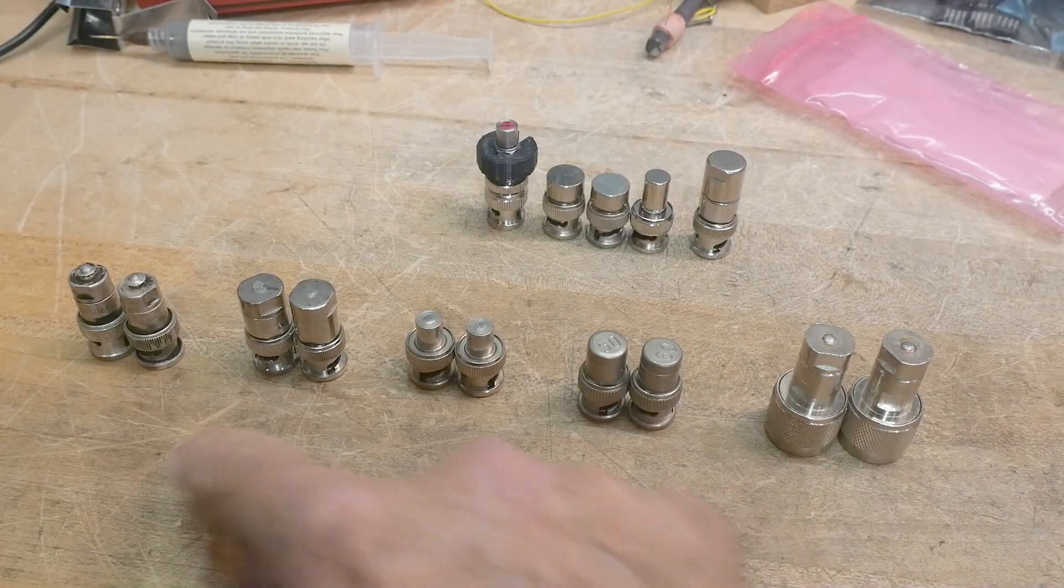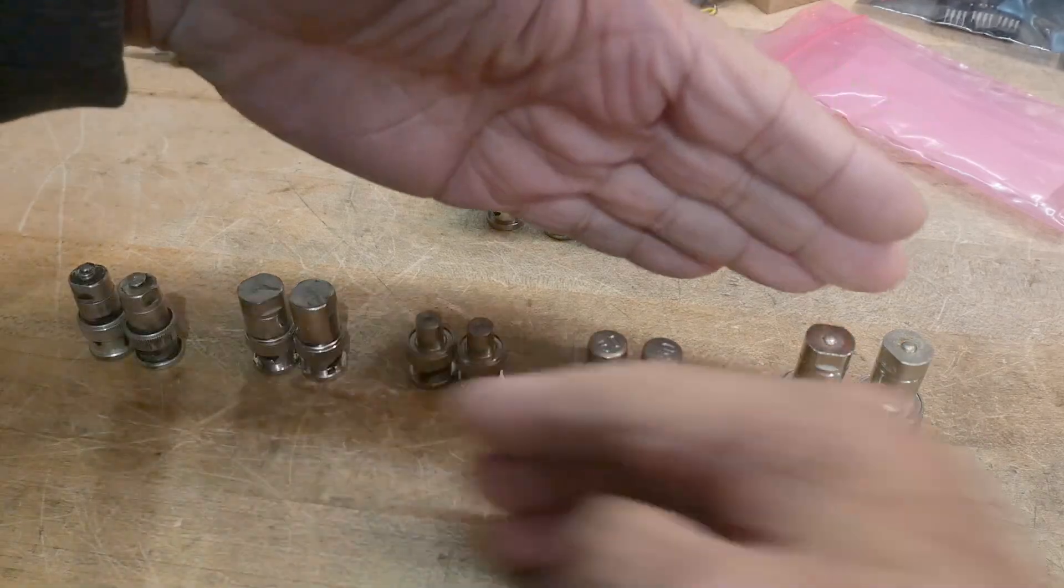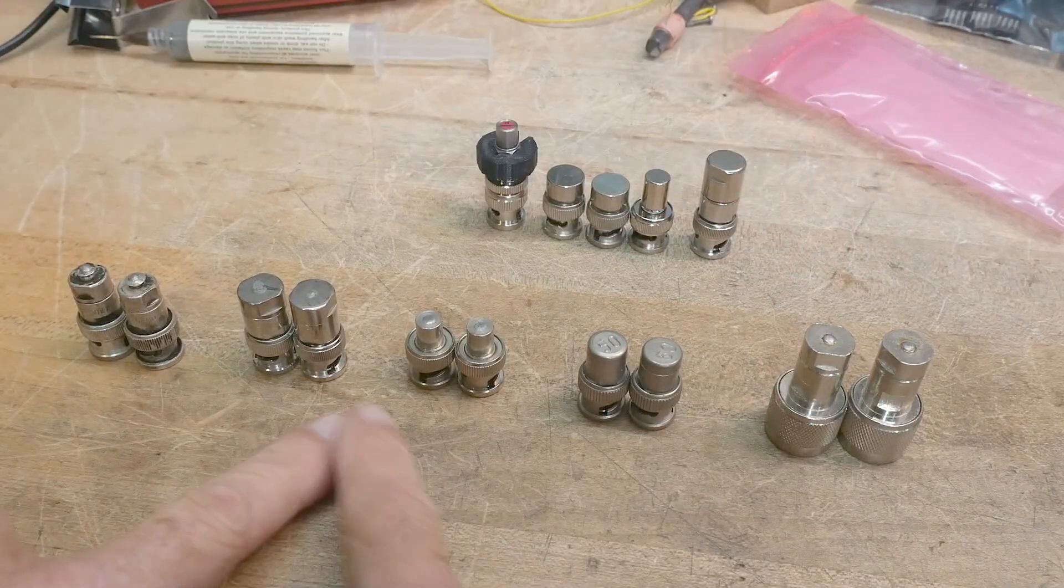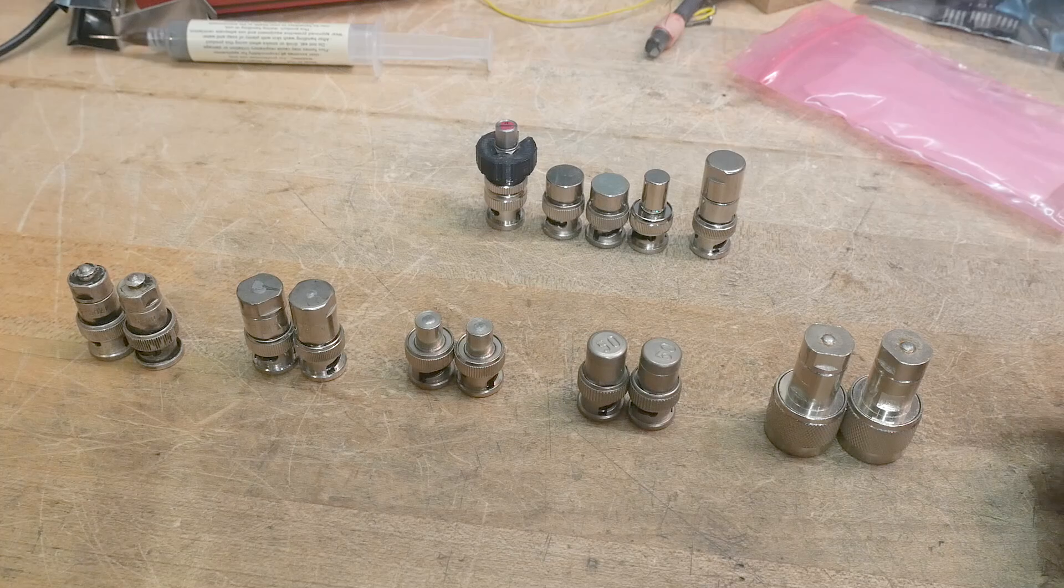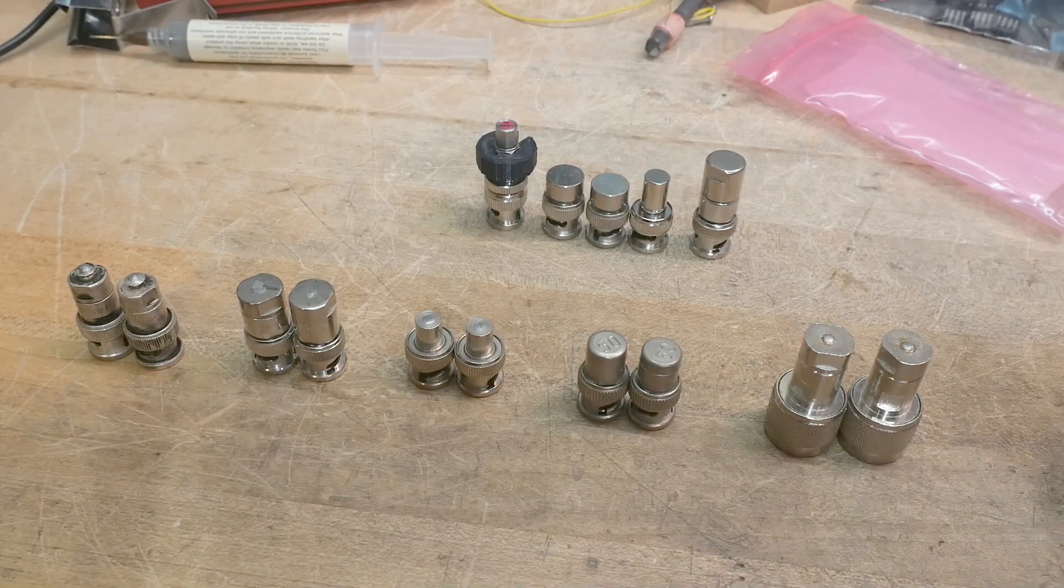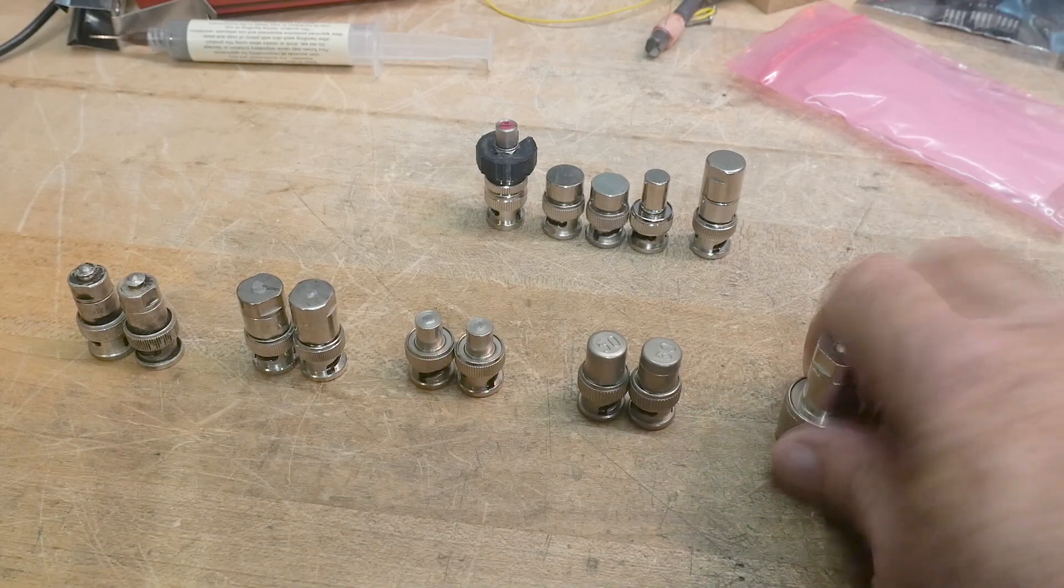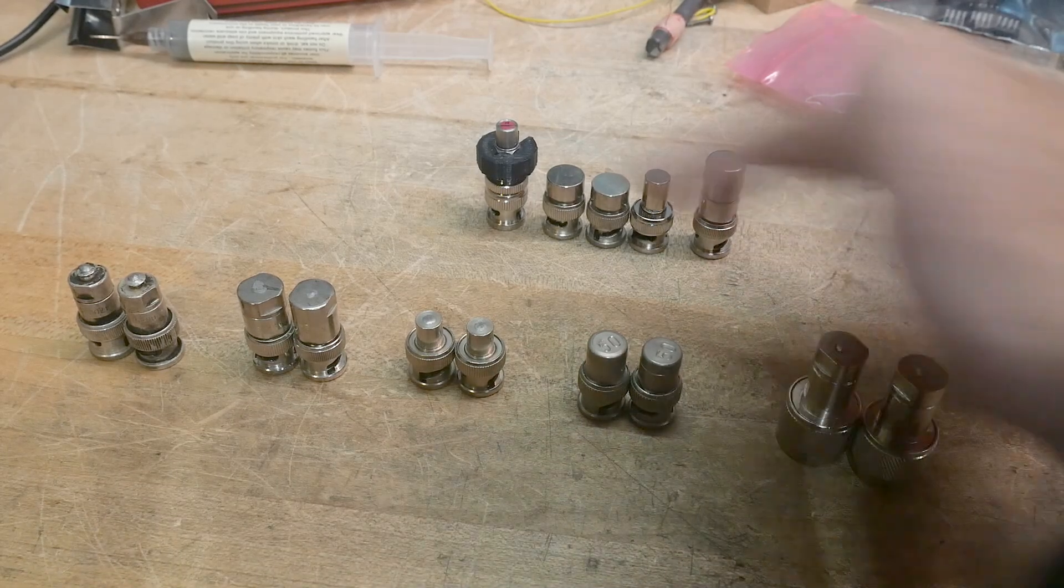All right, what's on the bench? We have a whole bunch of 50 ohm loads. These here in the front were given to me by Mike, and there are two of each. I get two of each kind here, mostly BNCs. These are N connectors, and then these are my own.